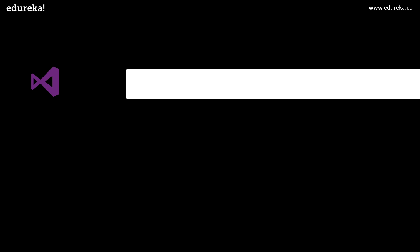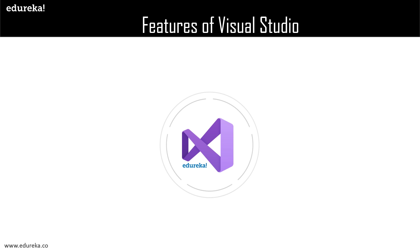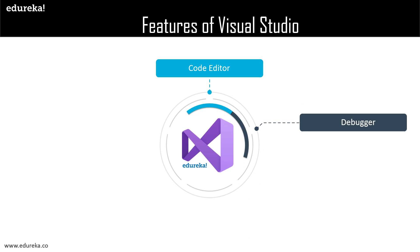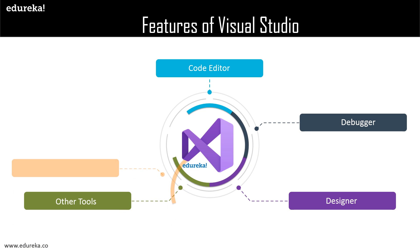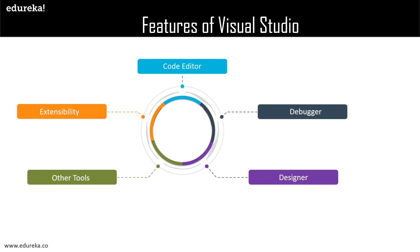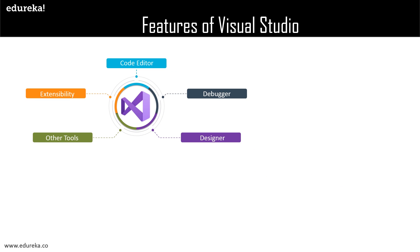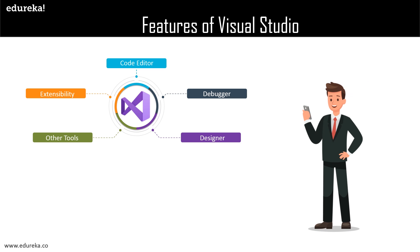Moving ahead, we shall discuss the important features of Visual Studio: code editor, debugger, designer, other tools, and extensibility. Now we shall discuss each one of them in detail. Firstly, the code editor — Visual Studio has the best-in-class code editor which supports multiple functionalities.